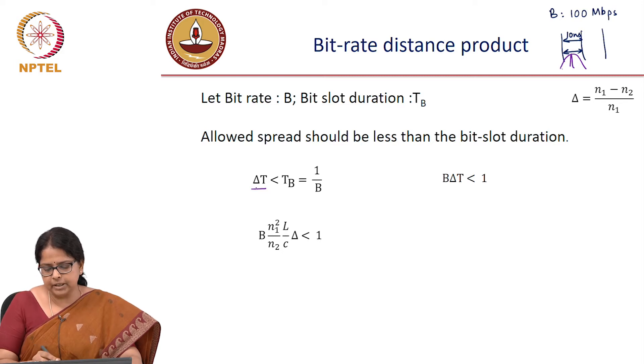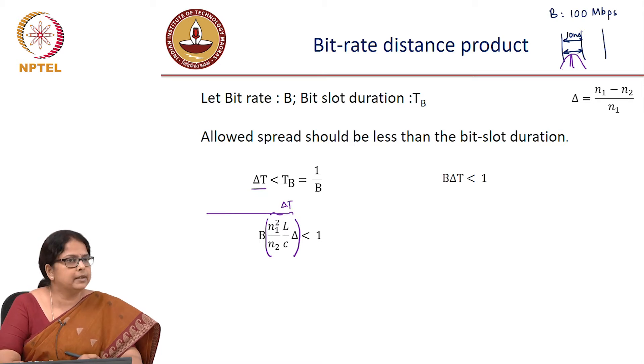It will be n1 square by n2 L over C delta. So this relation gives me that bit rate times delta must be less than 1, which means bit rate times this is my delta. Sorry, delta T. This must be less than 1.